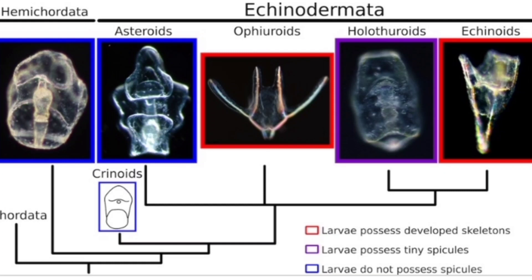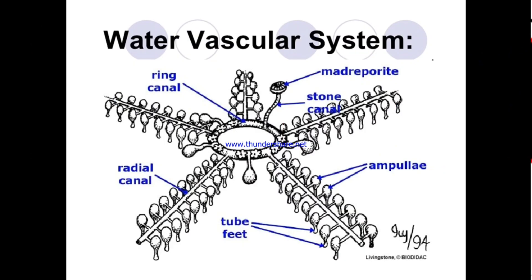The remaining classes — Asteroidea, Ophiuroidea, Echinoidea, and Holothuroidea — come under Eleutherozoa. Doliolaria larva is seen in Holothuroidea and Crinoidea. Bipinnaria and Brachiolaria larva is seen in Asteroidea. Pluteus larva is seen in Ophiuroidea and Echinopluteus larva is seen in Echinoidea.